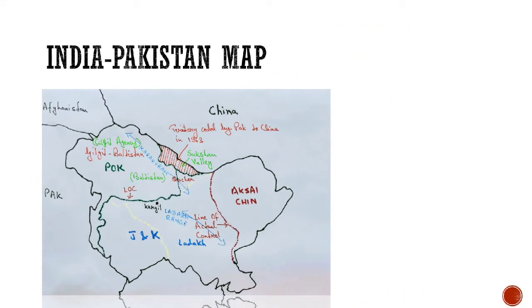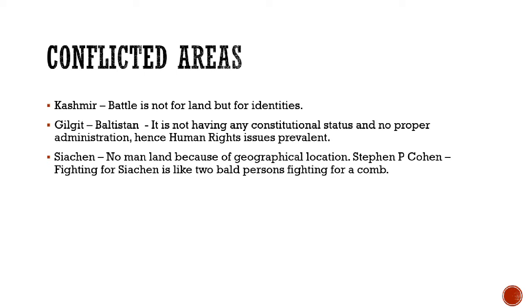After having a look at the map, we will go through the conflicted areas. Firstly, Kashmir — it is a battle not for land but for identities. When we look at the demographics, 70% of the population is in India. Kashmir is a Muslim majority area, Jammu has a Hindu majority, and Ladakh has a Buddhist majority. Because of these differing identities, it is a battle for identities.